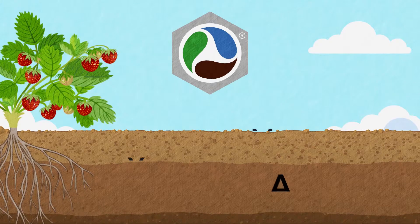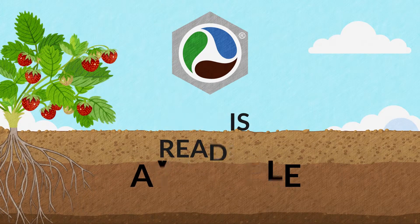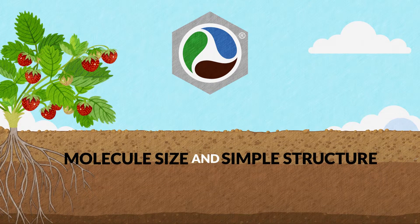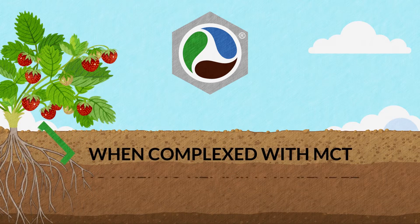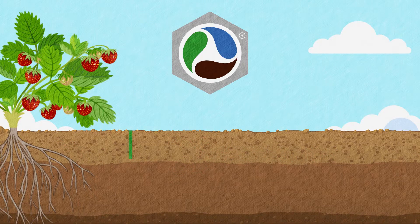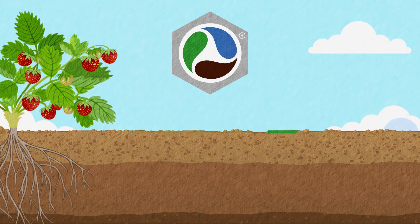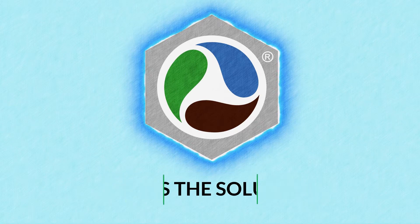So to review. Number one, MCT is readily available and does not need additional processing within the soil. Number two, MCT's carbon molecule size and simple structure allow it to be easily assimilated, either through foliar and soil application. When complexed with MCT, soil-applied nutrients avoid tie-up and remain available. MCT also frees up additional nutrients in the soil. MCT is the solution for providing the carbon and nutrients that plants need, exactly when and where they are needed.